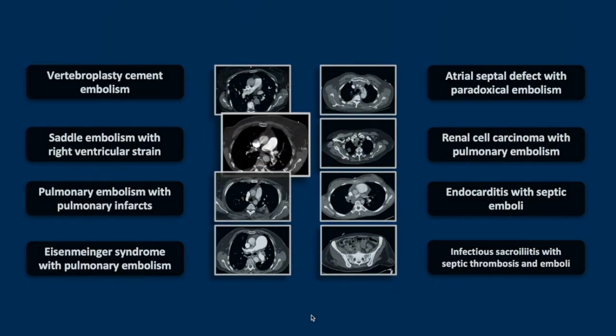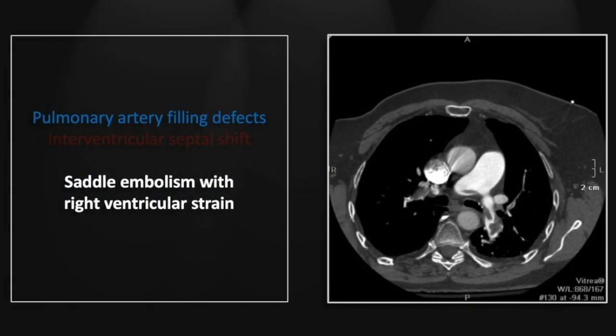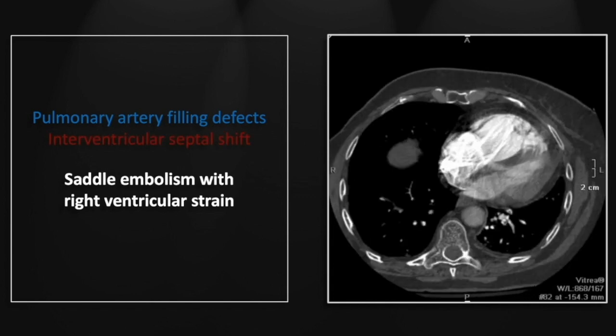Our next case is again relatively straightforward: a saddle embolism with right ventricular strain. There are extensive filling defects throughout the pulmonary arteries, bridging the pulmonary bifurcation and extending down into the lower lobes. There is also straightening of the interventricular septum with associated enlargement of the right ventricle and compression of the left ventricle.